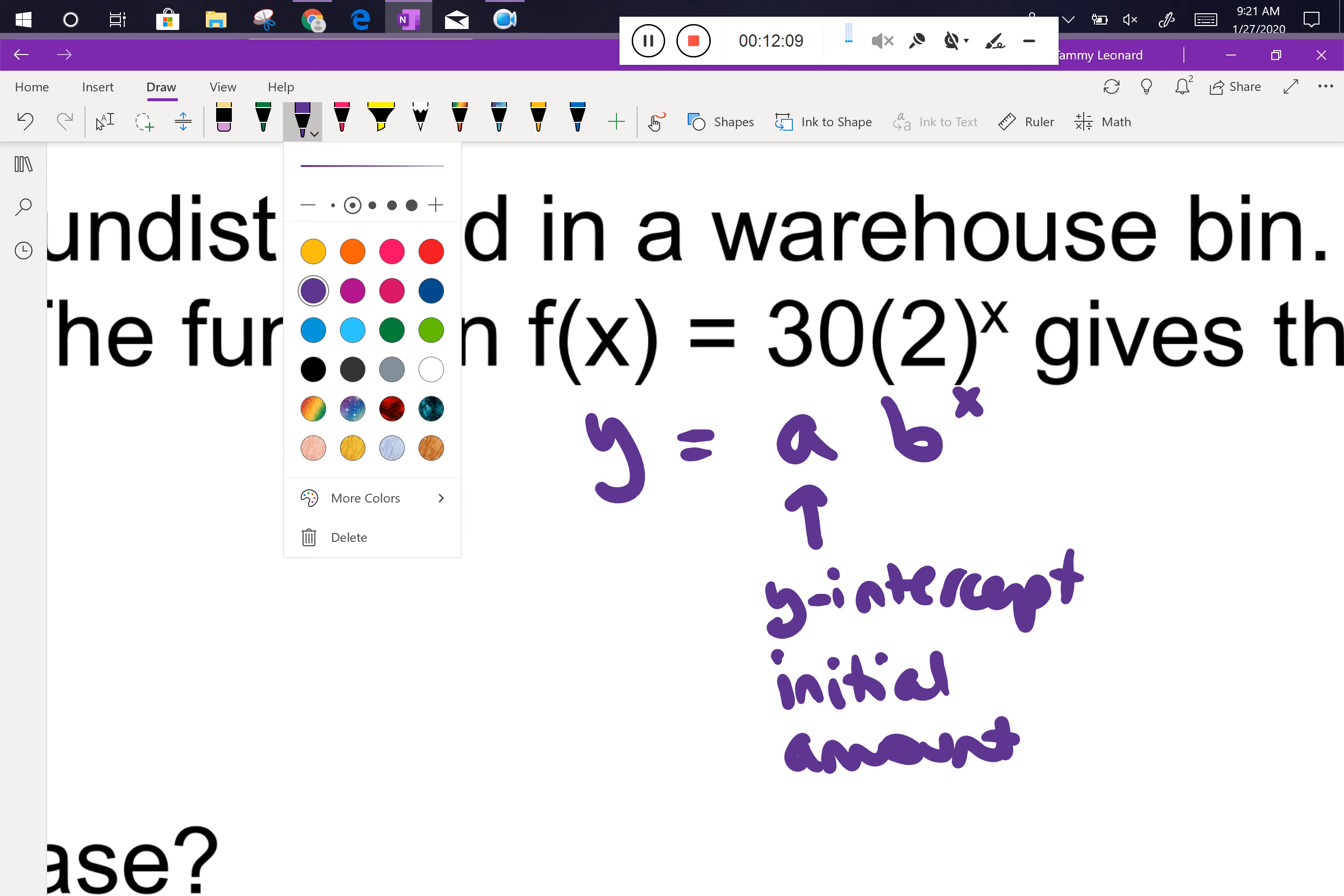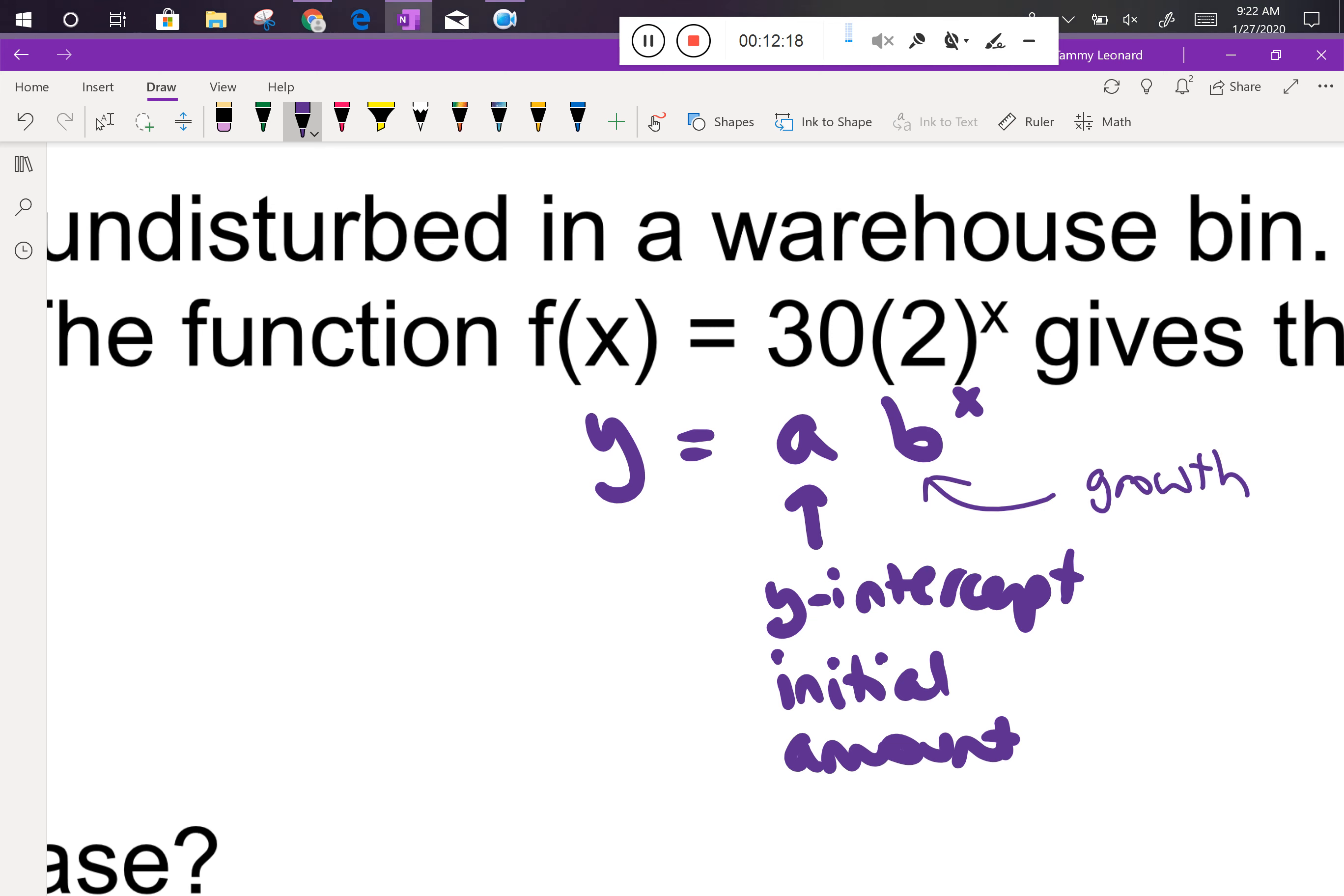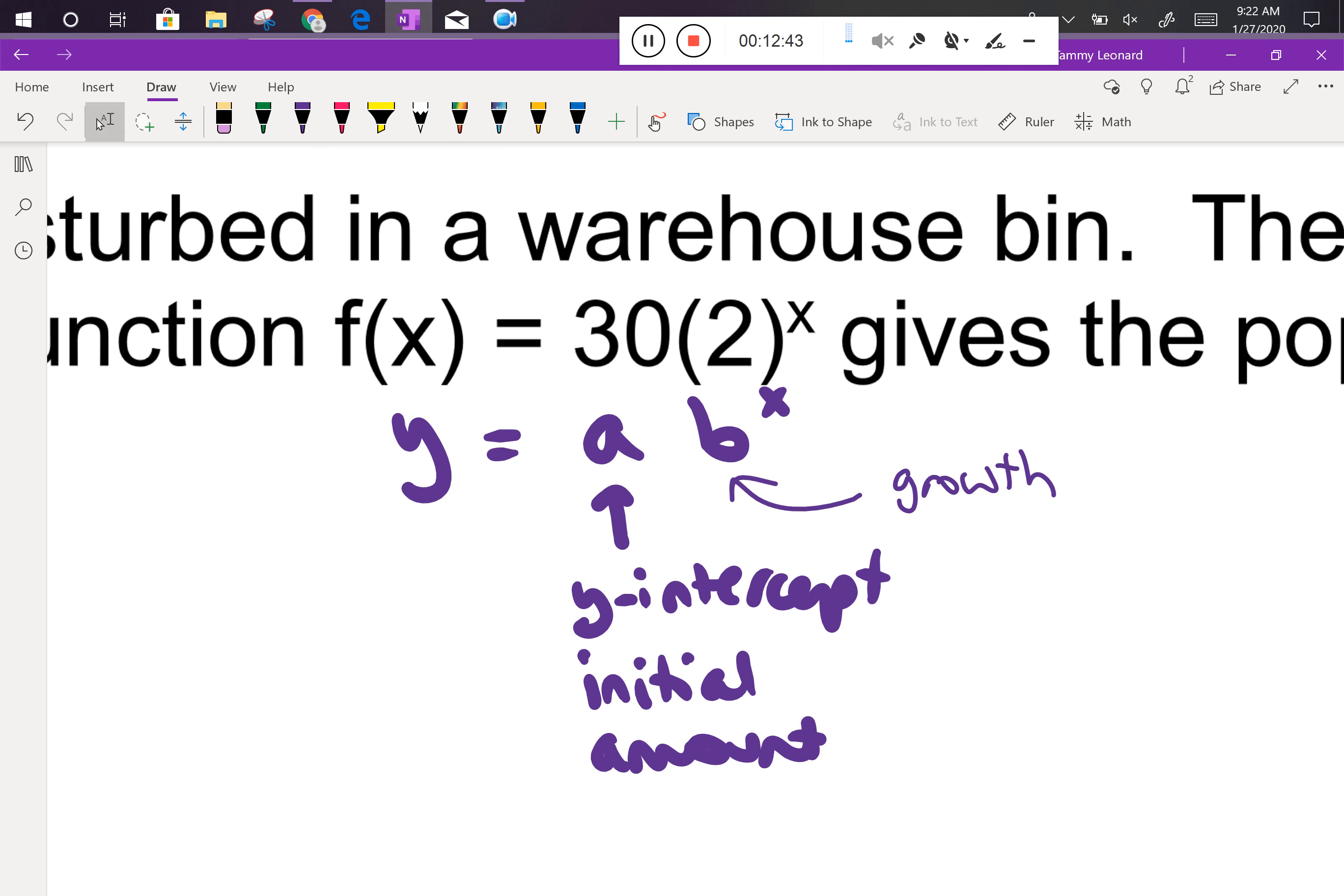So a, remember a is our y-intercept or our initial amount. And then our b is growth. How do I know that b is growth and not decay? How does this b value show growth? Well, what is the b value? Two. Is two bigger than one or smaller than one? Bigger than one, right? Remember, if it's bigger than one, it's showing growth. So that's how I know this is growth. Also, I just know that if you leave bugs alone and give them lots of food, you'll get more and more bugs, right? So the context of the problem also helps me with that.